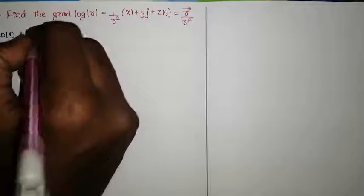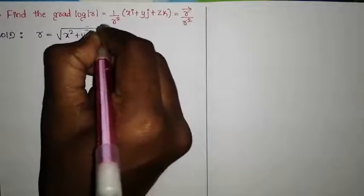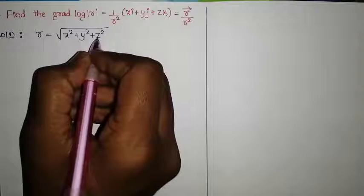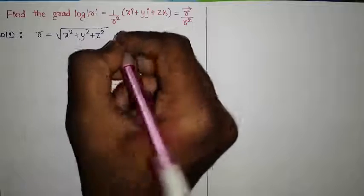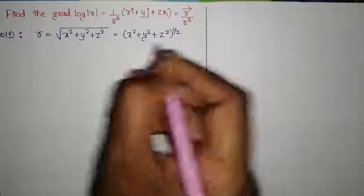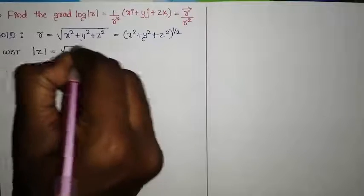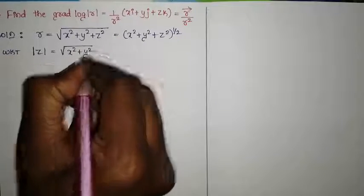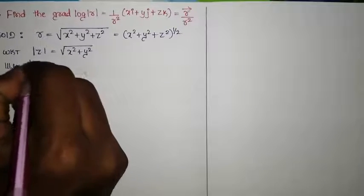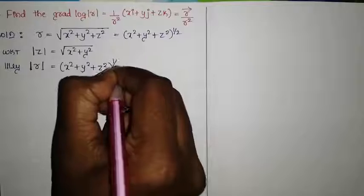Let us consider r as the square root of x² + y² + z². So r, or |r|, can be written as (x² + y² + z²) raised to the power 1/2. Similarly, the modulus |z| equals the square root of x² + y², which comes from complex numbers.